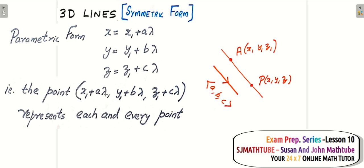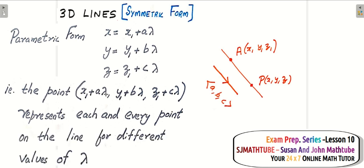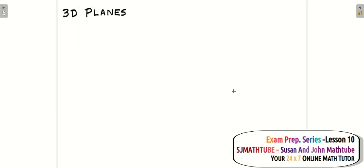So the parametric point represents each and every point on the line for different values of lambda. Make sure you note these things: the symmetric form, the parametric form, and the minimum requirements — one fixed point and one direction ratio or direction vector.